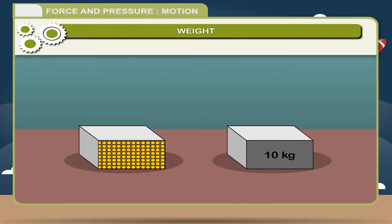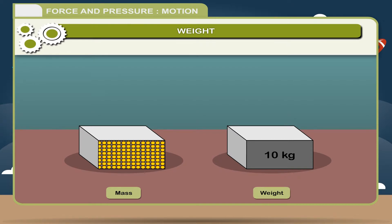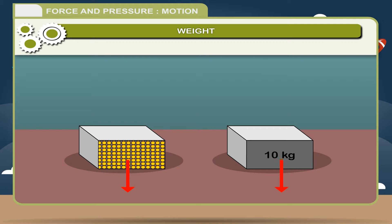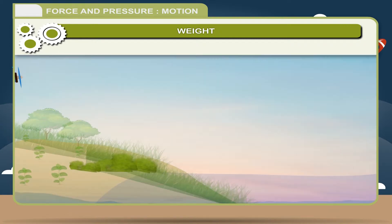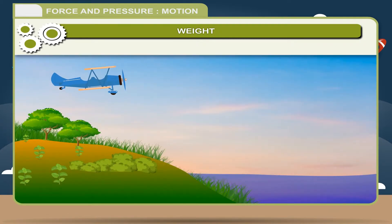Often we use the terms mass and weight in the same sense, but actually they are two completely different physical quantities. The force with which the earth attracts a body towards its center is called weight. This force is also called the force of gravity, and it always acts on a body downward towards the earth. It is maximum on the surface of the earth.